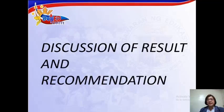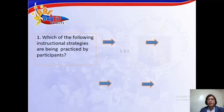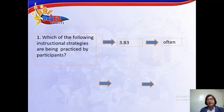For the discussion of results and recommendations, the following were found out. For research question number one, the computed mean is 3.83, which was verbally interpreted as often. The result connotes that the instructional strategies practiced by the teacher are often used as perceived by the students. The result also shows that the teacher utilized varied instructional strategies, which is acceptable to the learners, hence addressing the needs of the diverse learner.